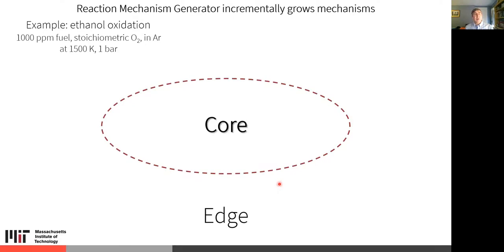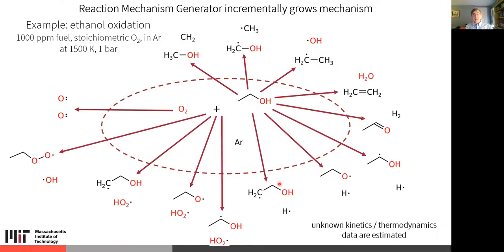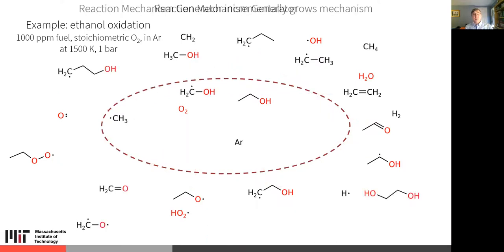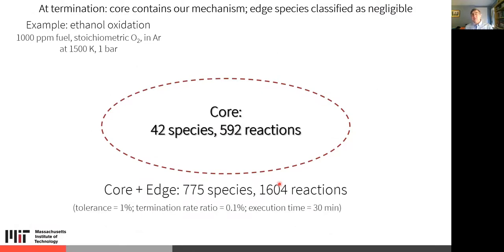Here's how it works. In a simulation of ethanol oxidation — a stoichiometric mixture of ethanol and oxygen in argon at initially 1500 K, like a shock tube experiment — RMG starts with ethanol and oxygen and enumerates all possible reactions those starting materials can do. It estimates rate coefficients for all those reactions, decides which are most important, and keeps adding more important species. In this case, it terminates with 42 species and 592 reactions in the core, after having considered more than 700 species and 1600 reactions.